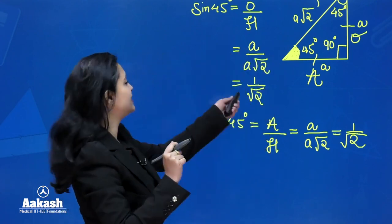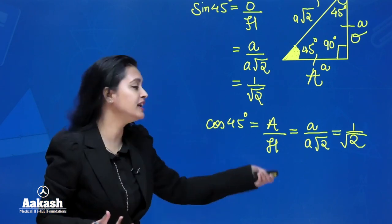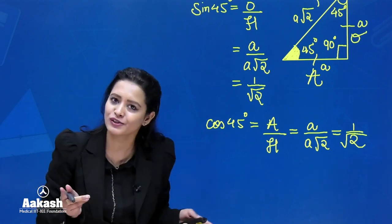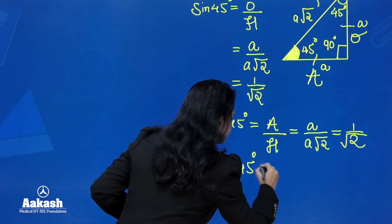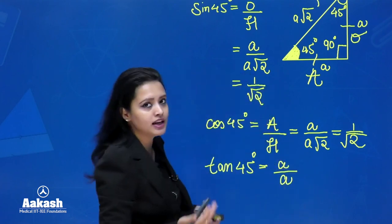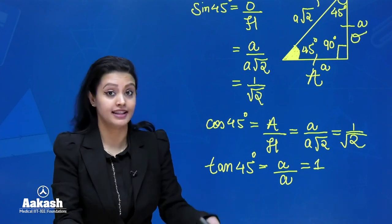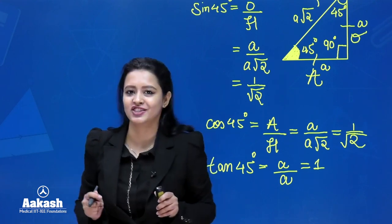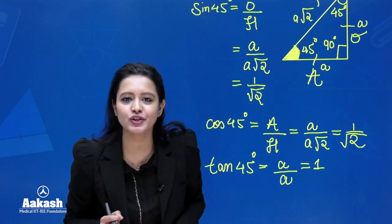Since sin 45° = 1/√2, cosec 45° = √2 (its reciprocal). Since cos 45° = 1/√2, sec 45° = √2 as well. Now, tan 45° equals opposite over adjacent, and since both opposite and adjacent equal A, tan 45° = 1. Therefore cot 45° is also 1, because tan and cot are reciprocals of each other. That's how we get all trigonometric ratios of 45 degrees.